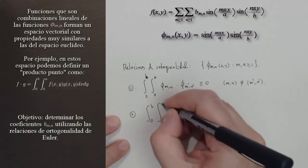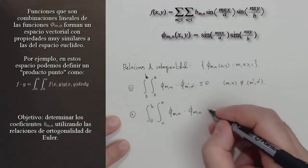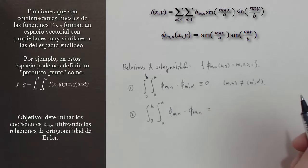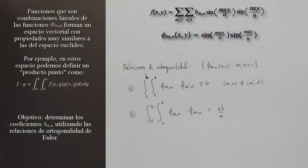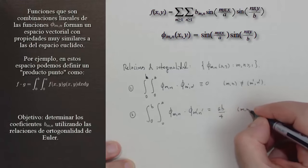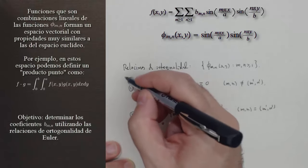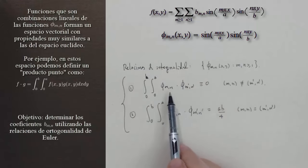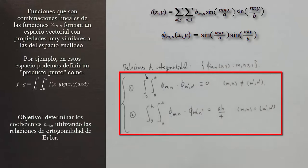La segunda condición de ortogonalidad es lo que pasa cuando son iguales. Tomamos la misma integral de Phi M'N por Phi M'N, y en este caso vemos que esto es A por B sobre 4. Cuando MN sea igual a M'N', la integral es AB sobre 4. Cuando la parejita MN es distinta de M'N', la integral da 0.